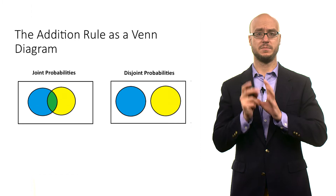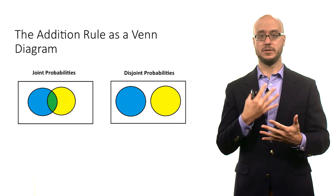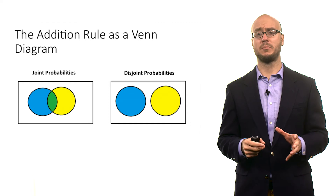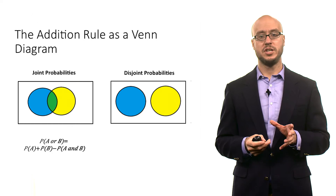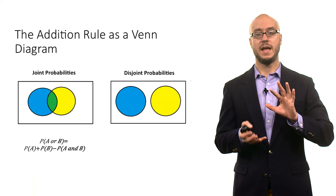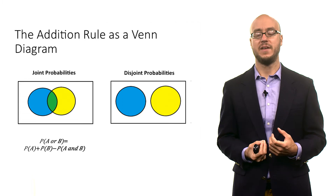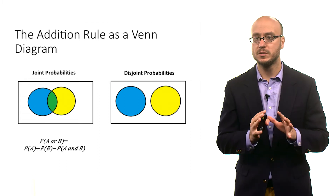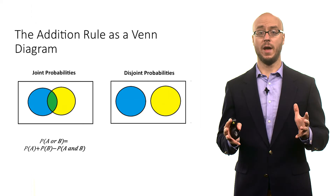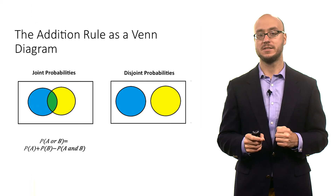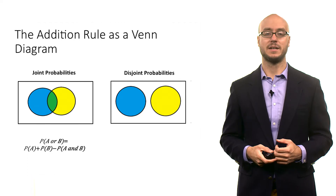Let's look at the addition rule in terms of a Venn diagram. Joint probabilities expressed as a Venn diagram overlap — there's some intersection. For disjoint events, the probability of A and B is zero, so there is no overlap. The addition rule says the probability of A or B is P(A) plus P(B) minus P(A and B) — that intersection. The reason we do that is we don't want to double count the intersection, because that middle part is embedded in both P(A) and P(B), so you've got to subtract it out.